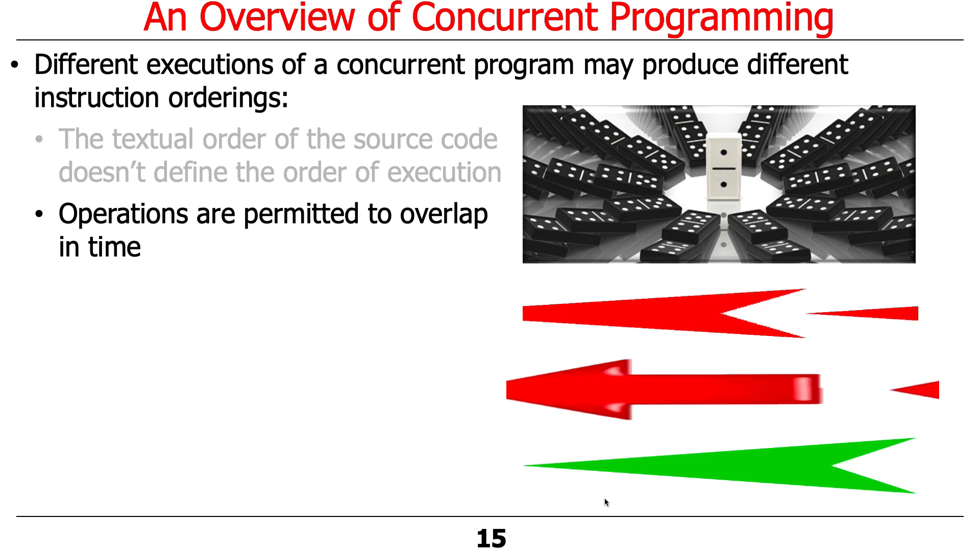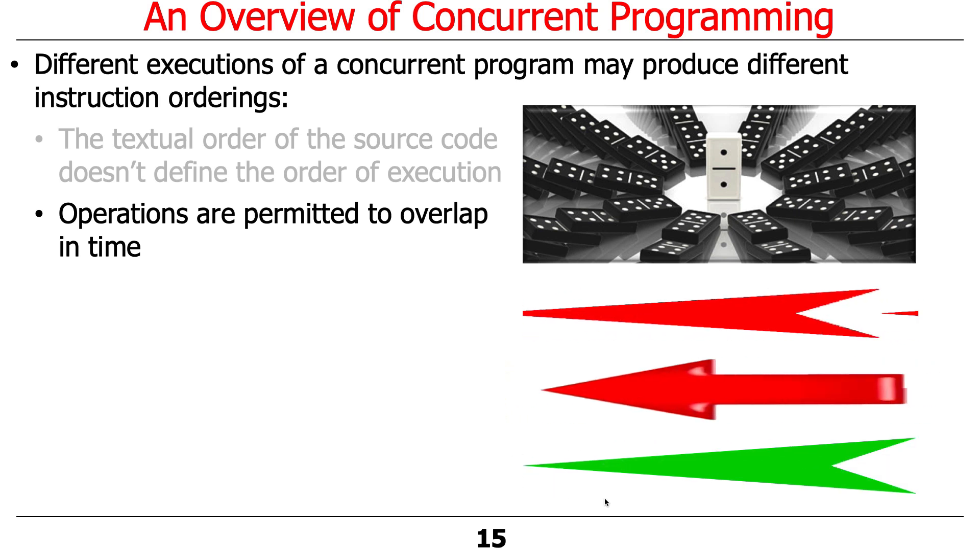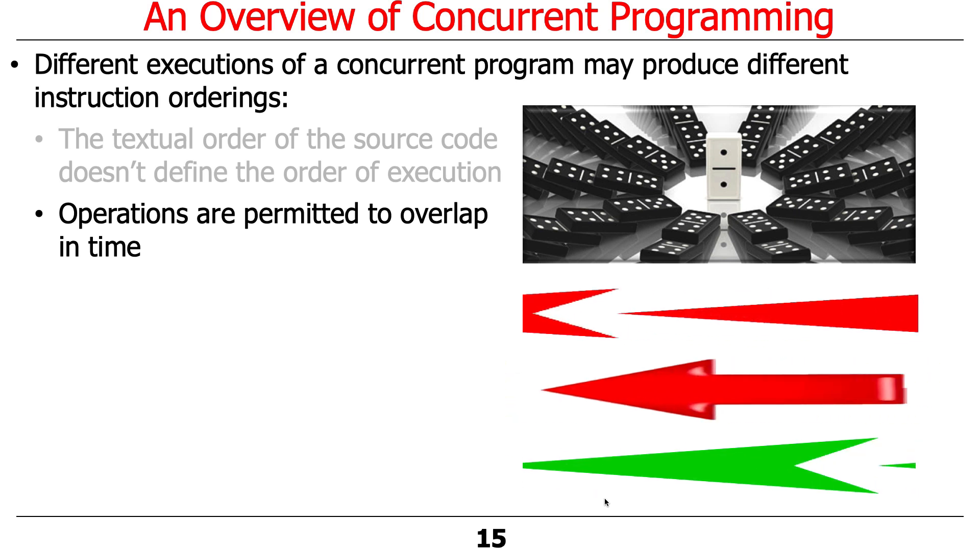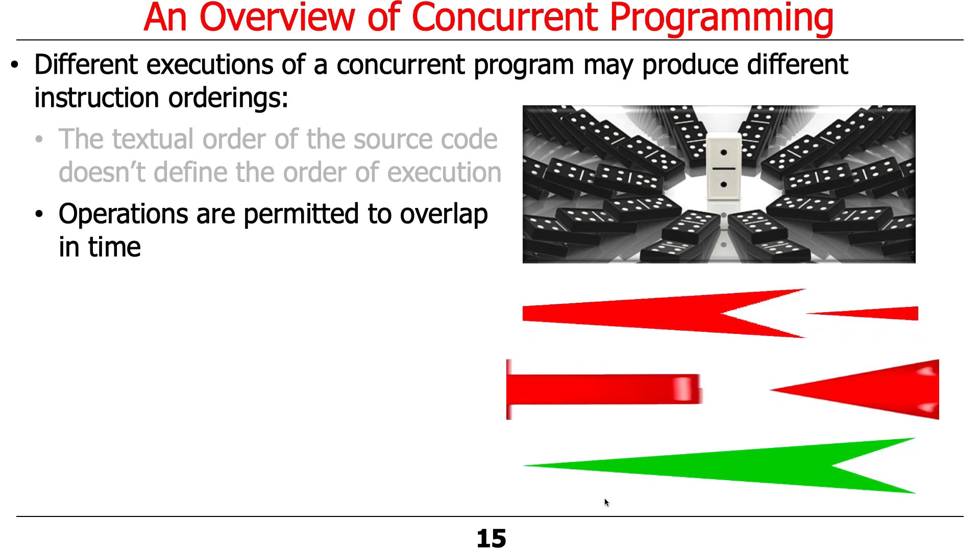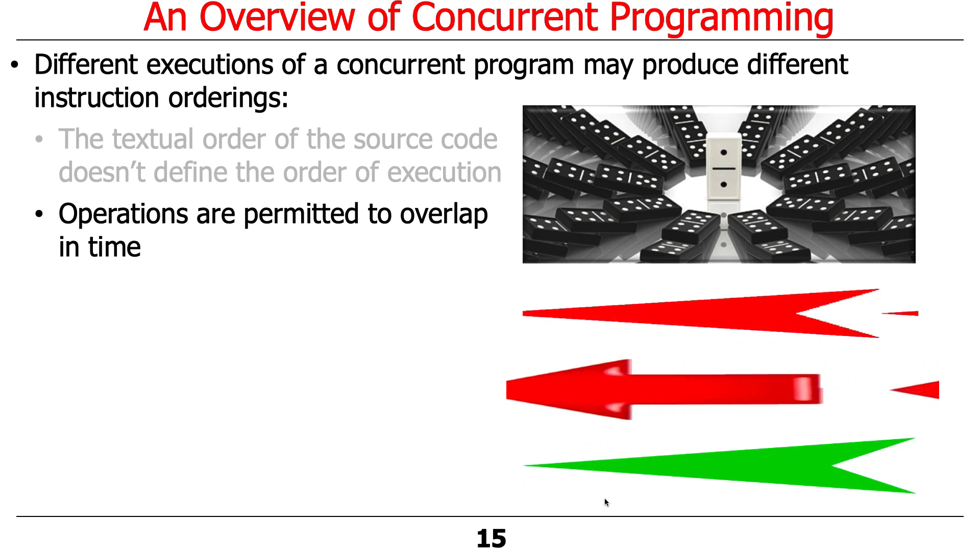With concurrency, things can be going on at the same time. The instructions can overlap, especially on a multi-core platform where you've got multiple physical units of parallelism to run things literally physically at the same time.